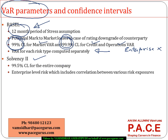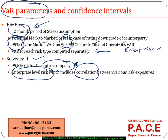When it comes to Solvency 2, we are focusing on the capital requirement based on the entire company's VAR. It takes individual risks and also the correlation between the various individual risk exposures, and finally computes a VAR at an enterprise level. That is the key difference. Solvency 2 is focusing on integrated enterprise-level computation for VAR, and that too at a 99.5% confidence level.